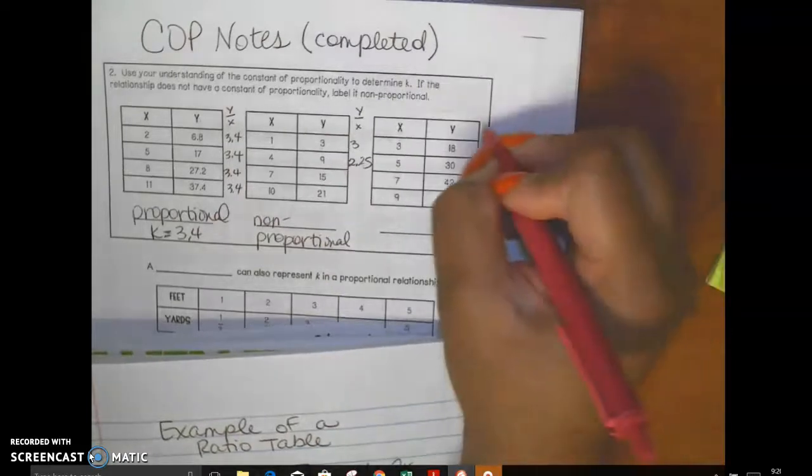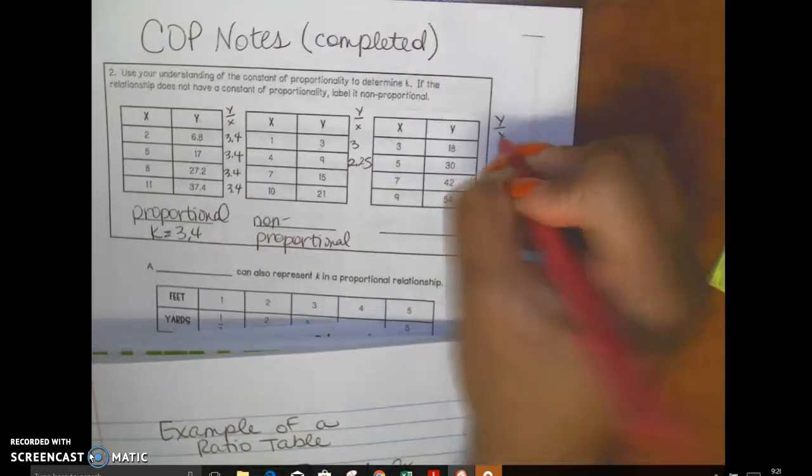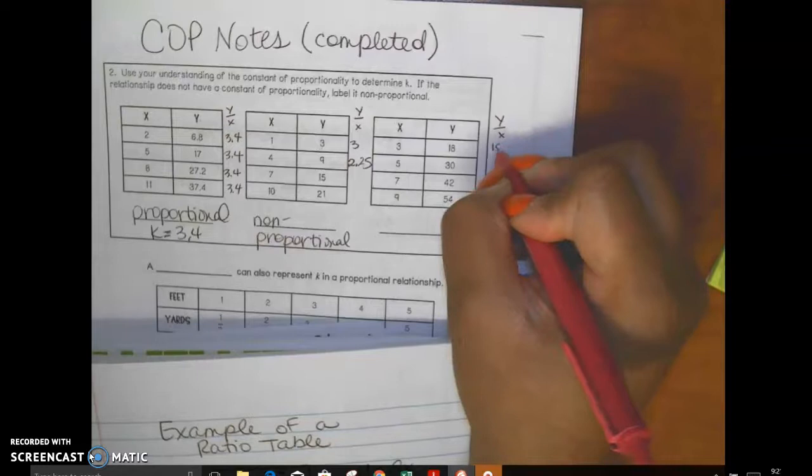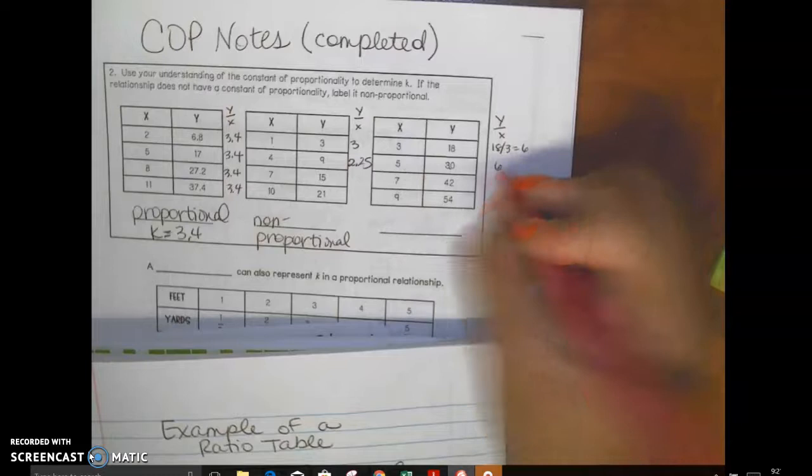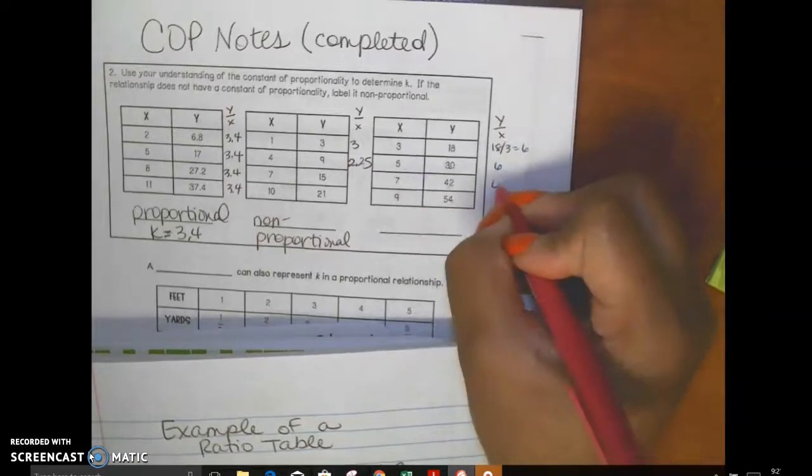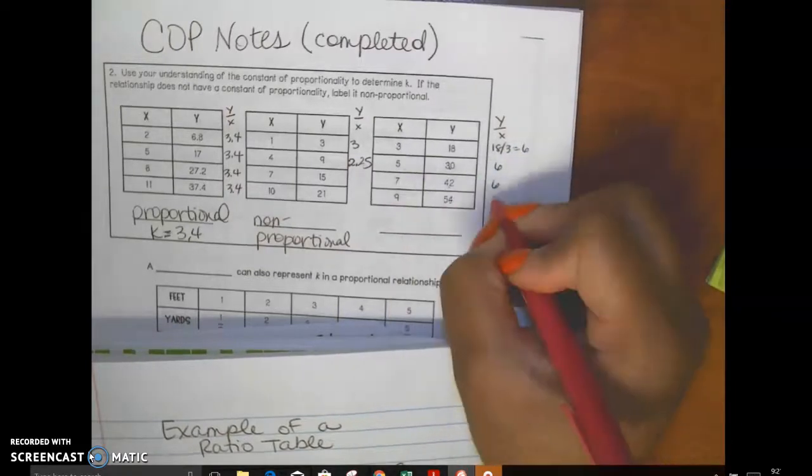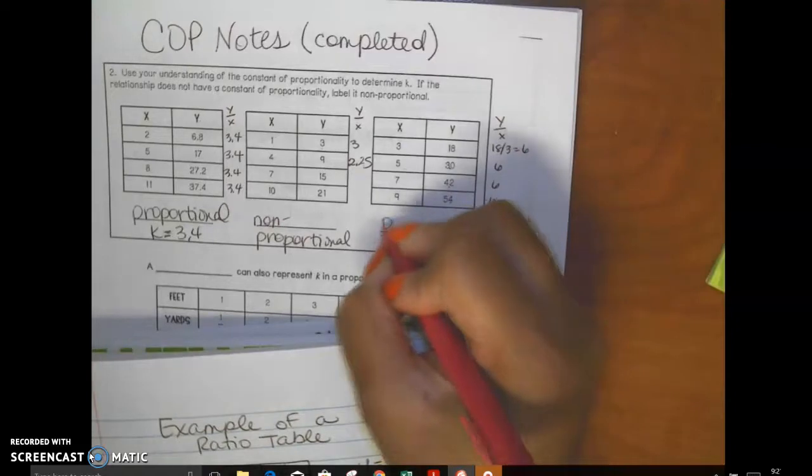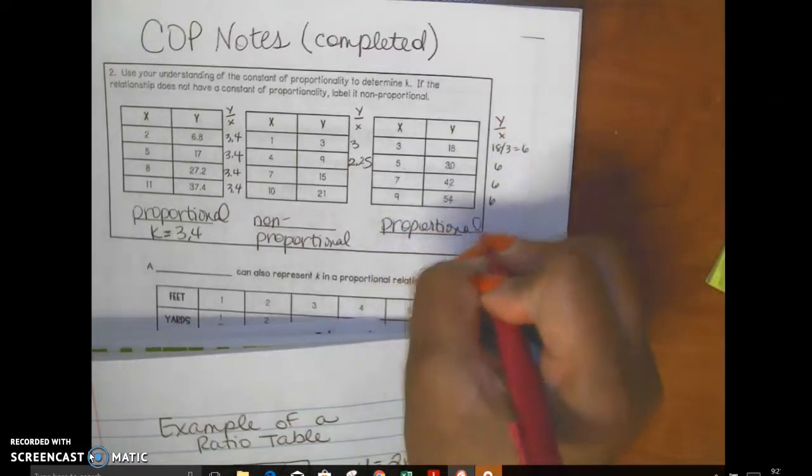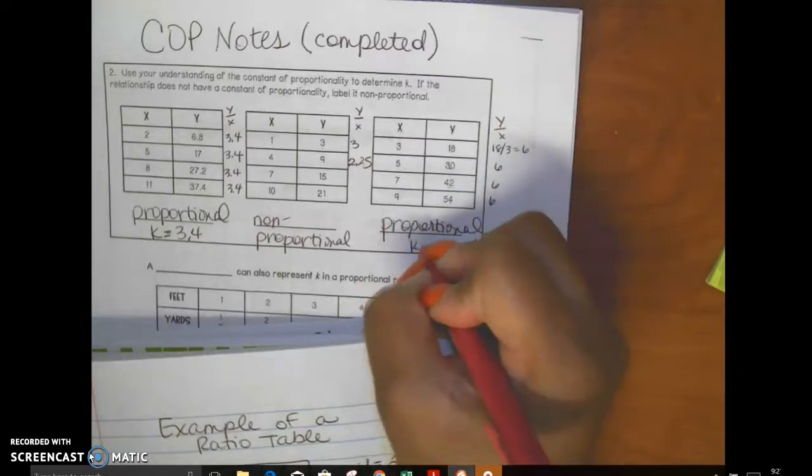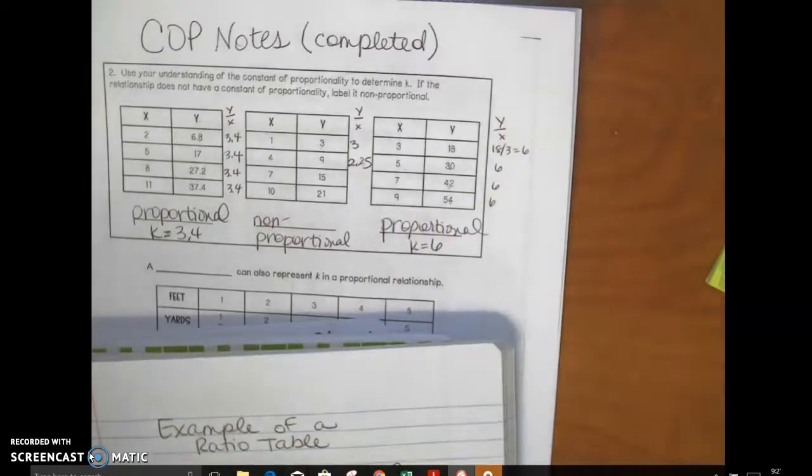This over here is y divided by x. Over here, I'm going to do y divided by x, which is 18 divided by 3, which is 6. 30 divided by 5 is also 6. 42 divided by 7 is 6. 54 divided by 9 is 6. This is proportional. K equals 6. Done with that.